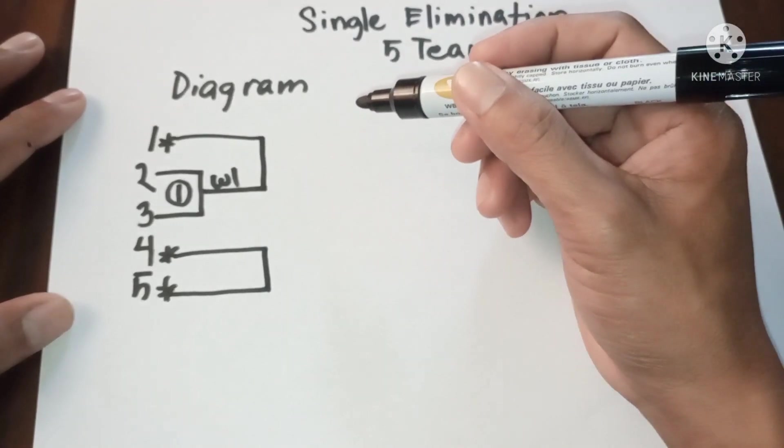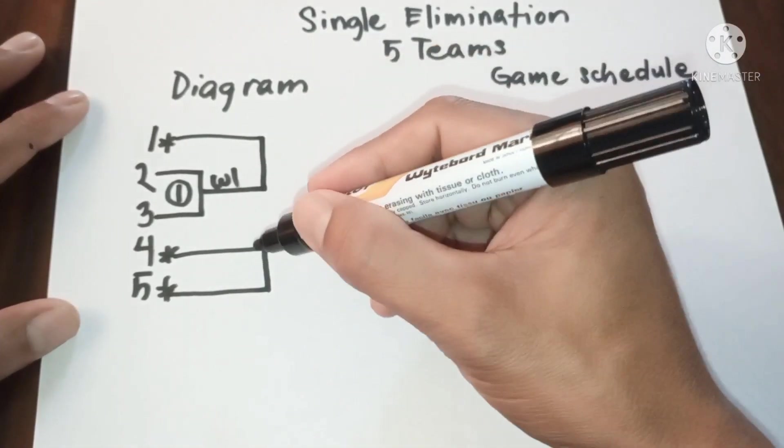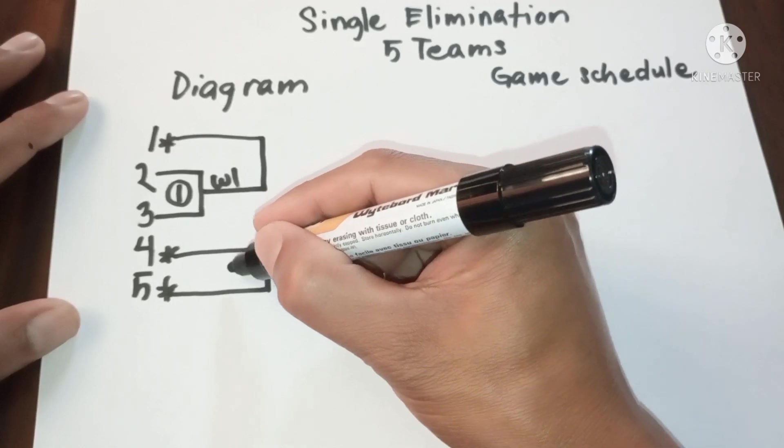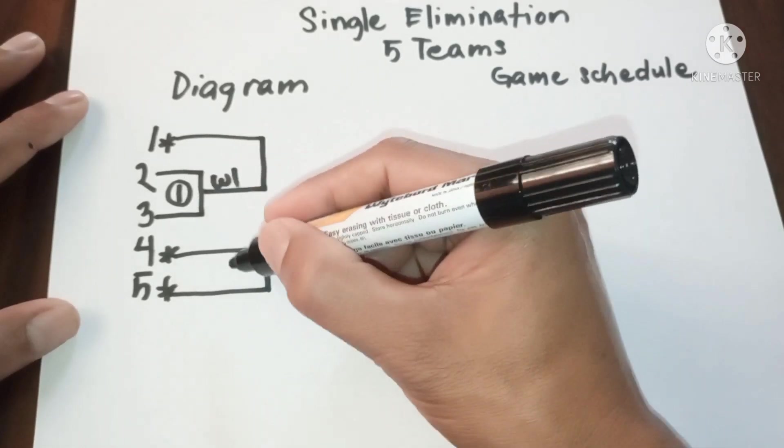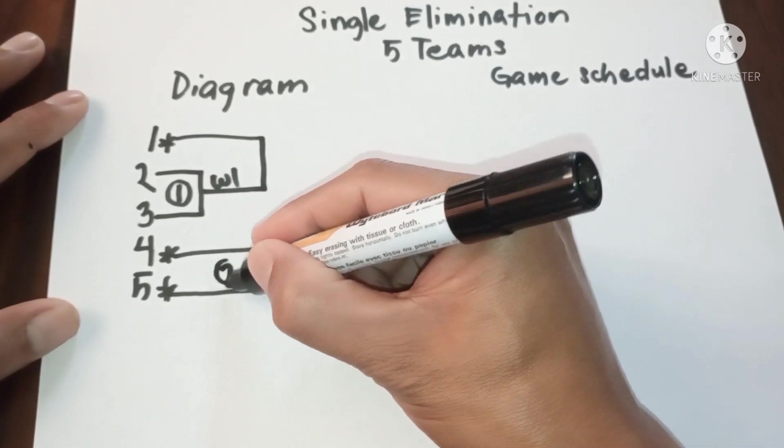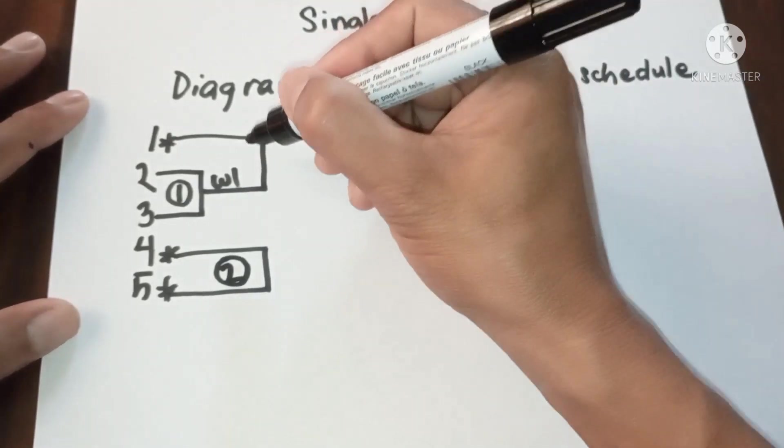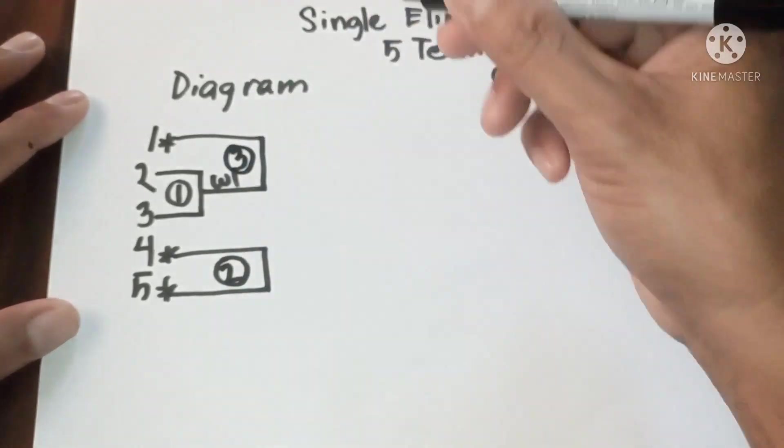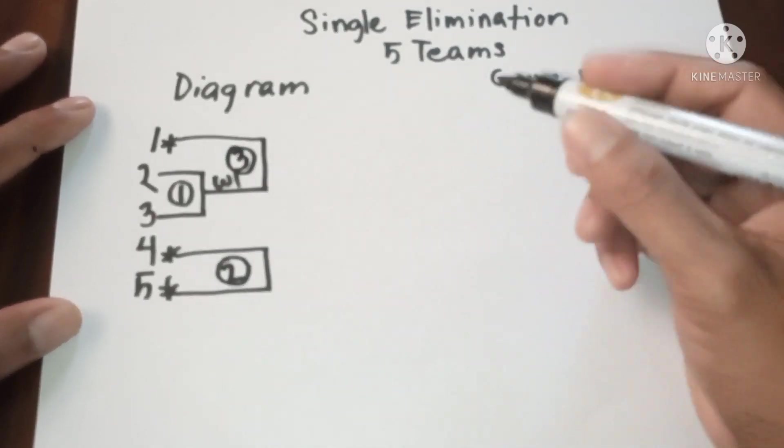Now let's proceed to second round. The second game will be four and five versus one, that's W2. And then this will be the third game.